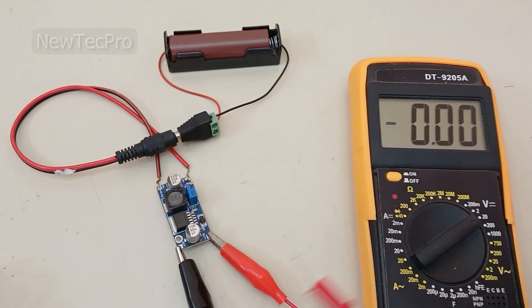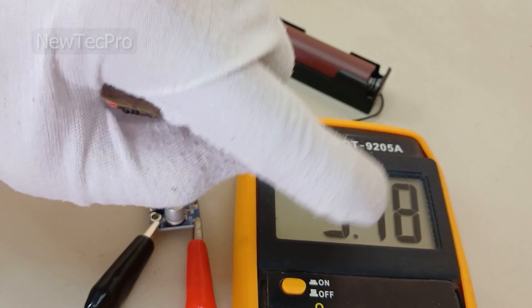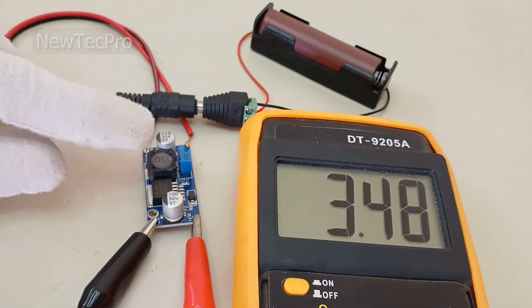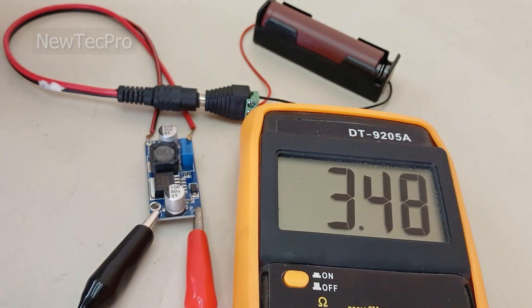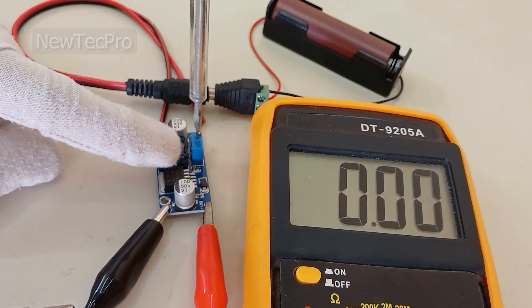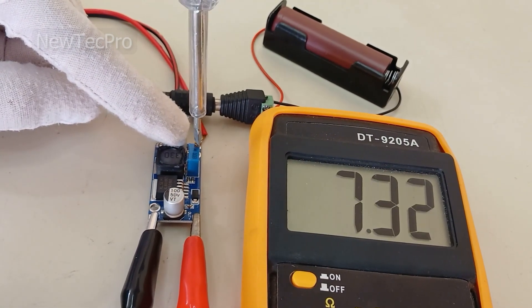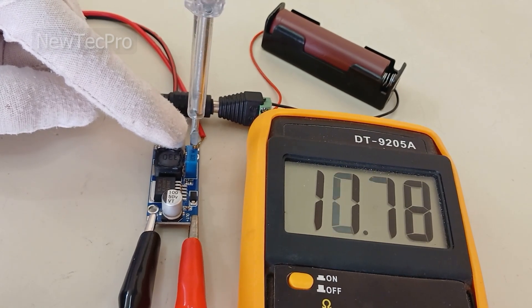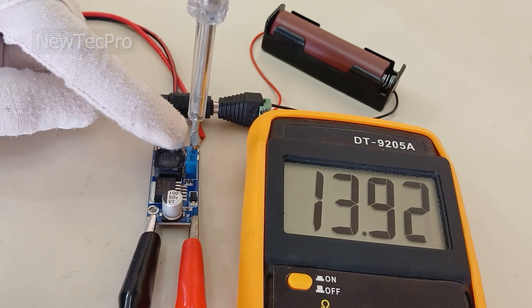Okay, my friends, you can see here 3.4 volts, and we'll try to step up this voltage to 24 volts with this multi-turn. As you can see, stepping up the voltage. I'll try to set it to 24 volts.